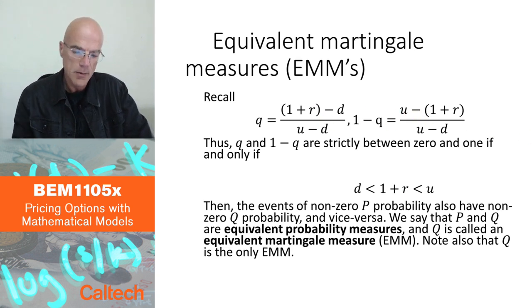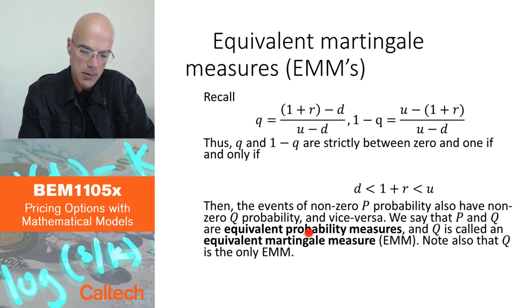So this strictly between, we say that these are equivalent probability measures. The formal definition is: p and q are equivalent probability systems or measures if the events of non-zero p probability also have non-zero q probability, and the other way around, and vice versa.